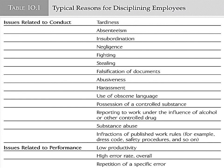Employee discipline becomes necessary due to issues related to conduct or performance. Examples of conduct issues include tardiness, absenteeism, insubordination (lack of obedience), negligence, refusing to do assigned work, fighting, stealing, falsification of documents, abusiveness, harassment, use of obscene language, possession of controlled substances, reporting to work under the influence of alcohol or controlled drugs, substance abuse, and infractions of public work rules such as violating safety procedures. Performance-related problems include low productivity, high error rate, and repetition of specific errors.